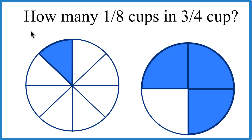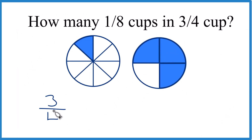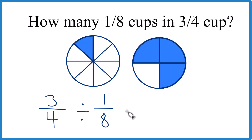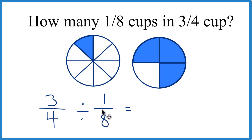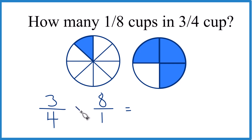Let's do this mathematically. So we have 3/4 of a cup here, and we want to know how many times 1/8 goes into 3/4. So we're going to divide: 3/4 divided by 1/8. What we can do is take the reciprocal of 1/8 — move the 8 to the top, then move that 1 to the bottom, and 8 over 1, that's the reciprocal for 1/8. But now, instead of division, we can just use multiplication, and that's a lot easier.